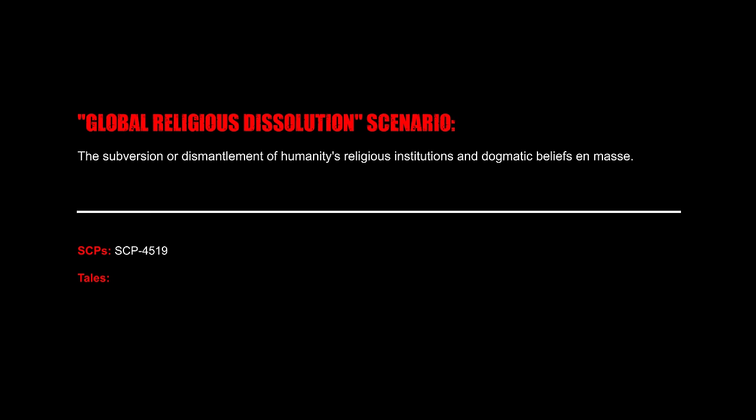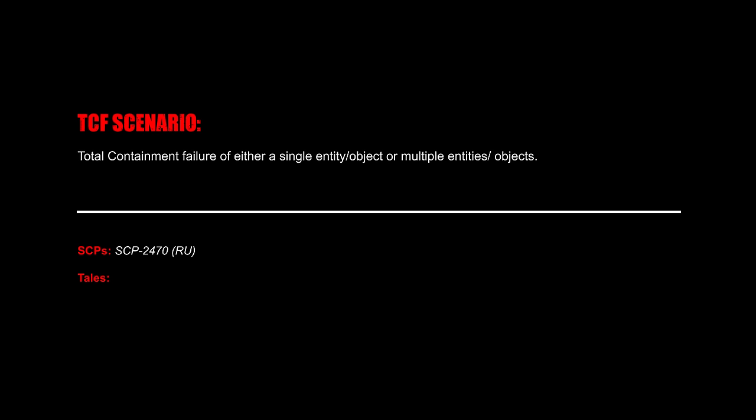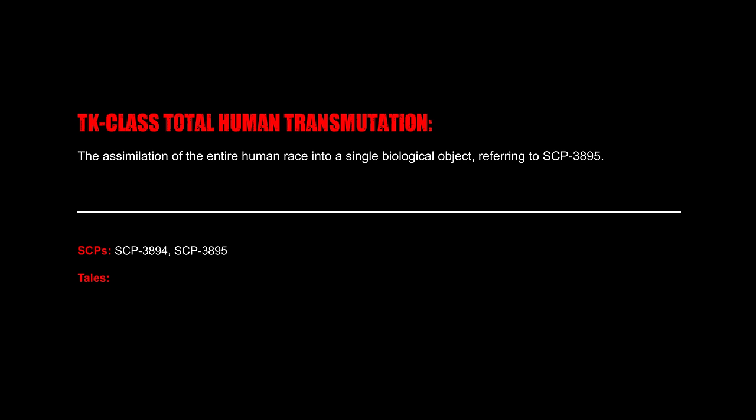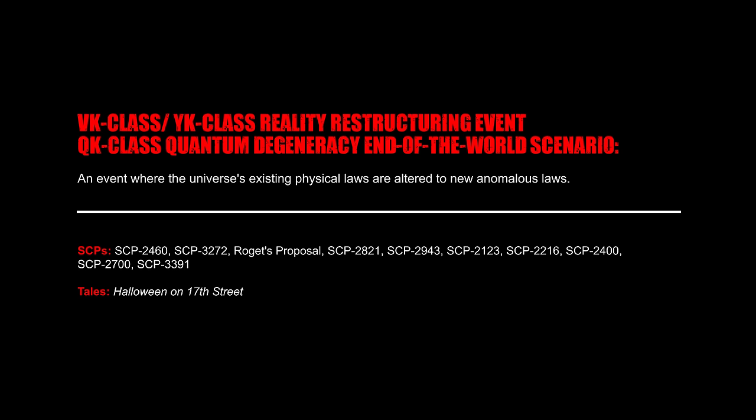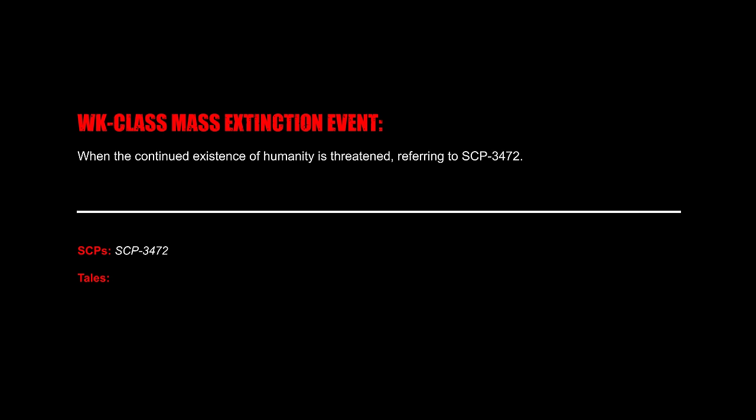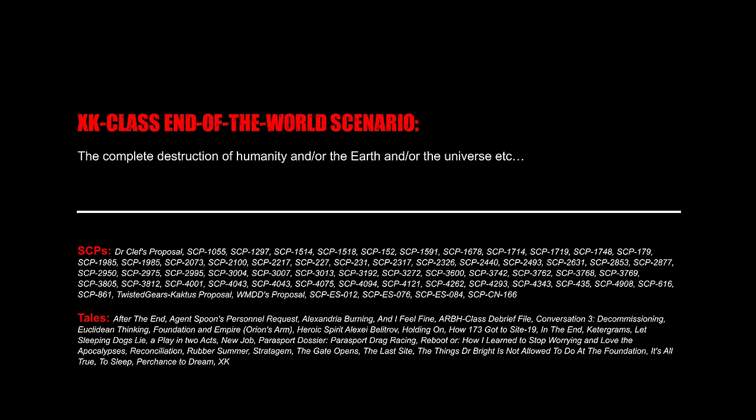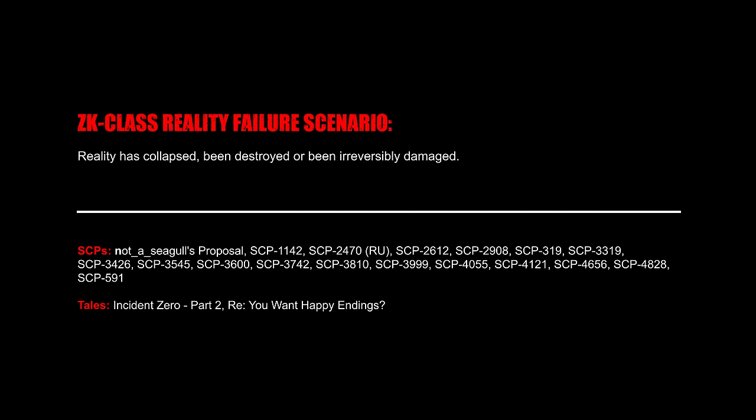TCF Scenario: Total containment failure of either a single entity or object, or multiple entities or objects. TK Class Total Human Transmutation: The assimilation of the entire human race into a single biological object, referring to SCP-3895. VK/YK Class Reality Restructuring Event and QK Class Quantum Degeneracy End of World Scenario: An event where the universe's existing physical laws are altered to new anomalous laws. WK Class Mass Extinction Event: When the continued existence of humanity is threatened, referring to SCP-3472. XK Class End of the World Scenario: The complete destruction of humanity, the Earth, the universe, etc. ZK Class Reality Failure Scenario: Reality has collapsed, been destroyed, or been irreversibly damaged.